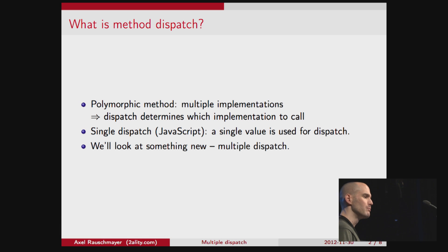what is method dispatch? If you have a polymorphic method, that means that you have multiple implementations, and we'll soon see an example to make it clearer what I mean. And if you have those multiple implementations, the dispatch determines which of those implementations will be called when you invoke the method.